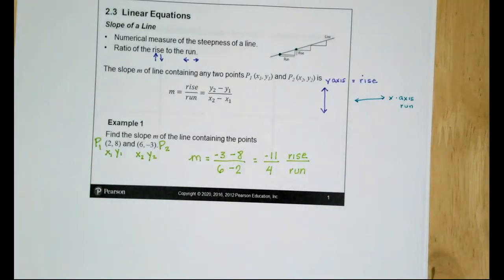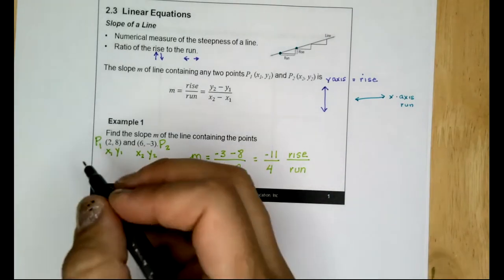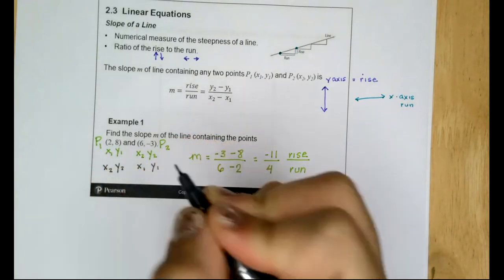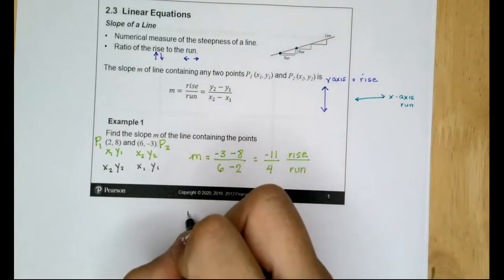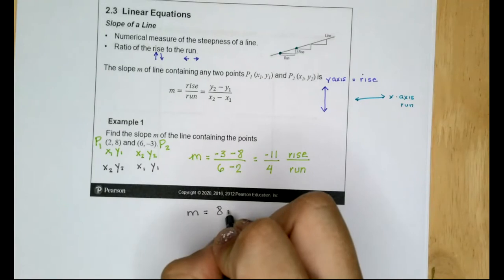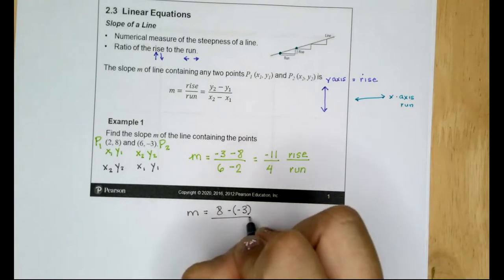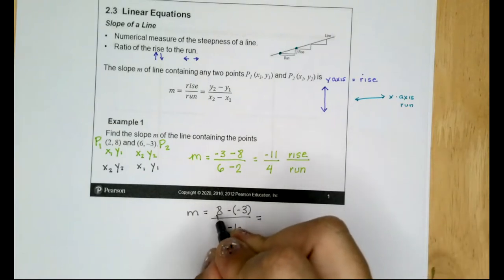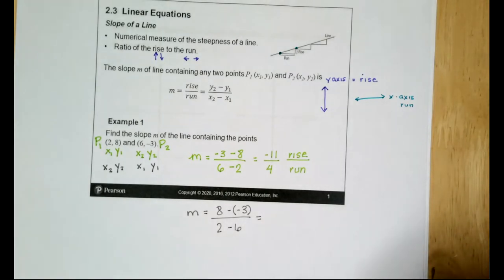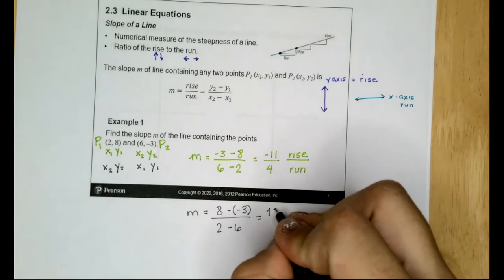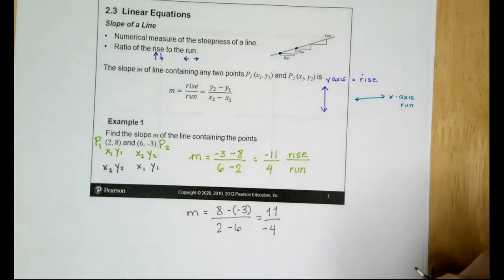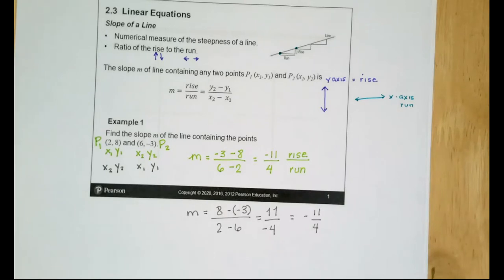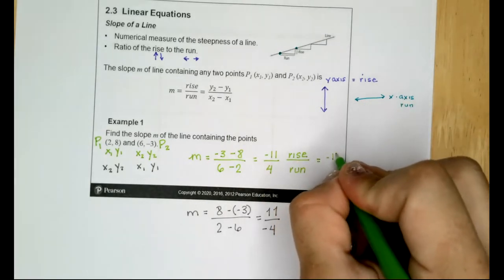I'll also show you that it does not matter which is P1 or P2. Doing it the other way: the slope m is 8 minus negative 3 over 2 minus 6. Eight minus negative 3 becomes 8 plus 3, because minus a negative is a positive. So we get positive 11 on top and negative 4 on the bottom, which is also negative 11 fourths.